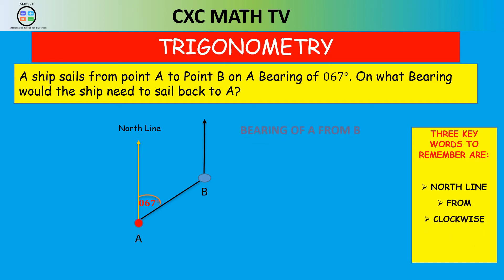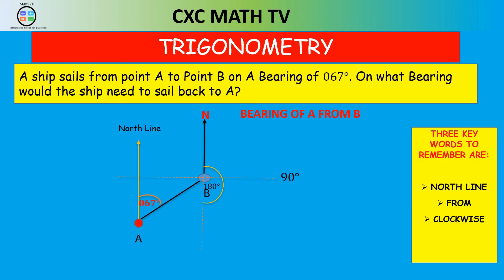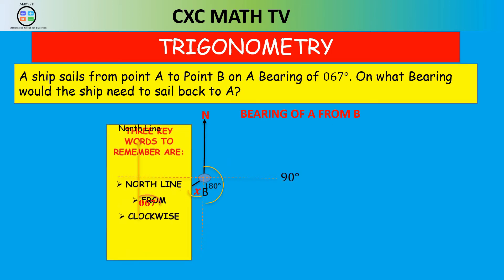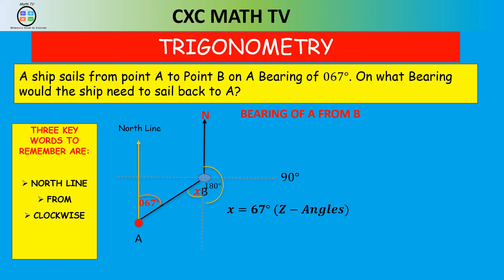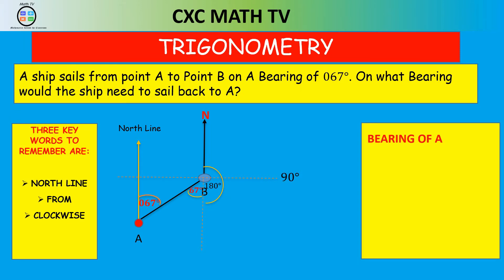So the first thing is you draw your north line at B. The angle is measured from that north line in a clockwise direction. Going to the east would be 90 degrees from B; going directly below — south — would be 180 degrees; and going to the west of B that would be 270 degrees. So going south below B would be 180 degrees plus that small angle x. Using the Z-angles rule, that angle x would be 67 degrees.